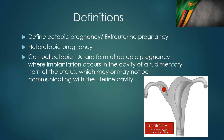Starting with definitions — an ectopic pregnancy is also called an extrauterine pregnancy. It is the implantation of the conceptus outside the endometrial cavity. Extrauterine pregnancy is a synonym for ectopic pregnancy. A heterotopic pregnancy is where we have both an intrauterine and an ectopic pregnancy at the same time. This is quite rare, with a prevalence of about 1 in 20,000 to 30,000 pregnancies.